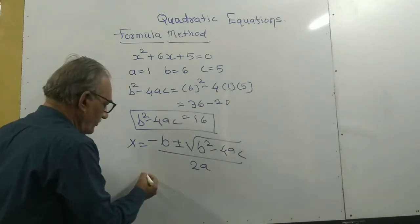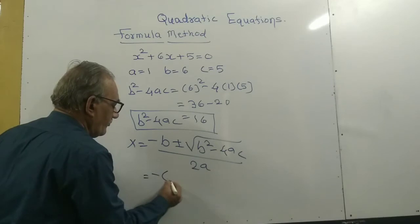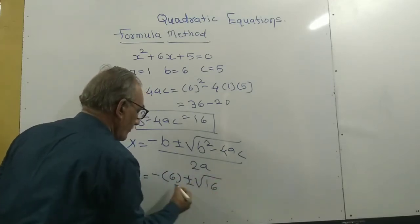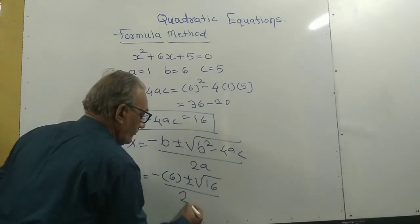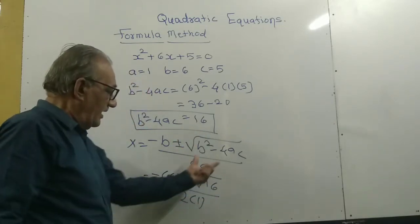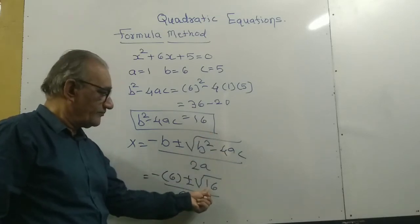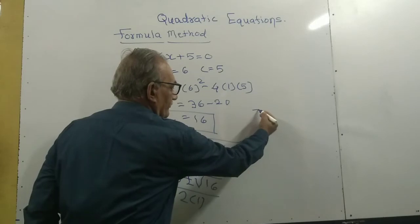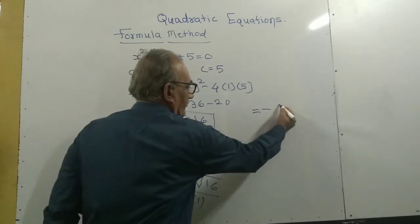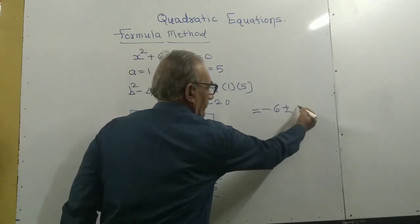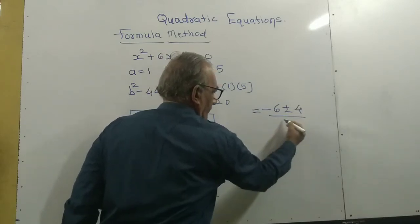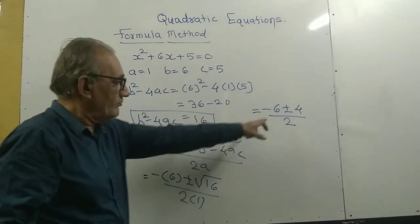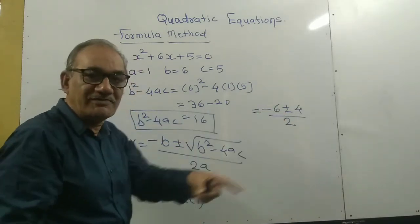Let's see, am I right? The formula gives us x = (-6 ± √16) / 2.